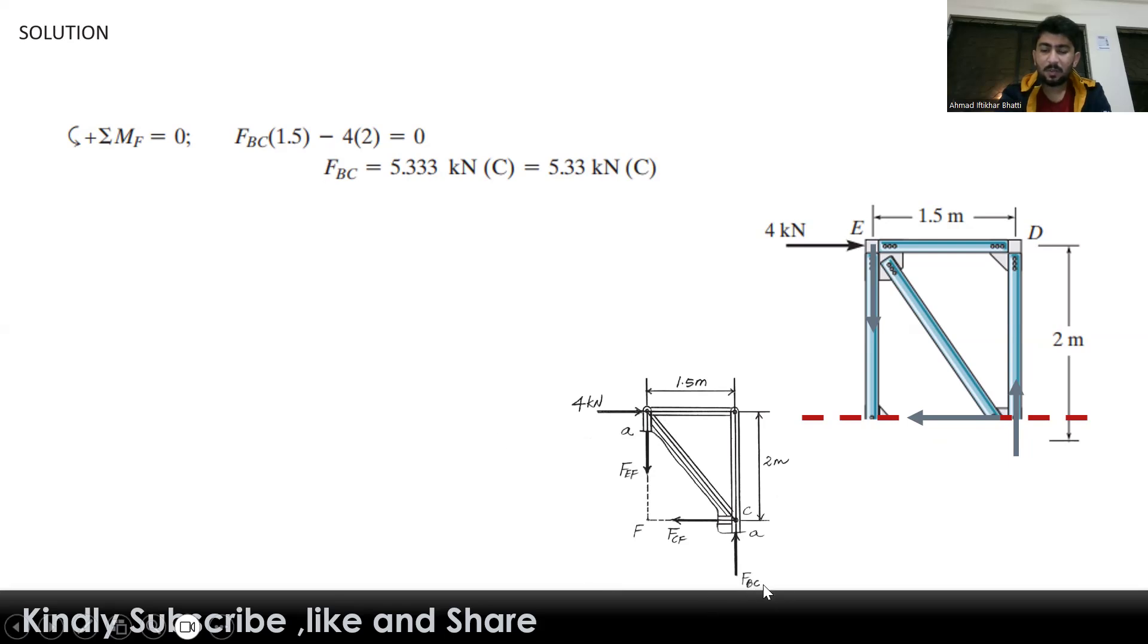For the force in member BC, we have a perpendicular distance of 1.5 meters, and it rotates anticlockwise, so it is positive. Through this, we get the force in member BC as 5.33 kilonewtons in compression.